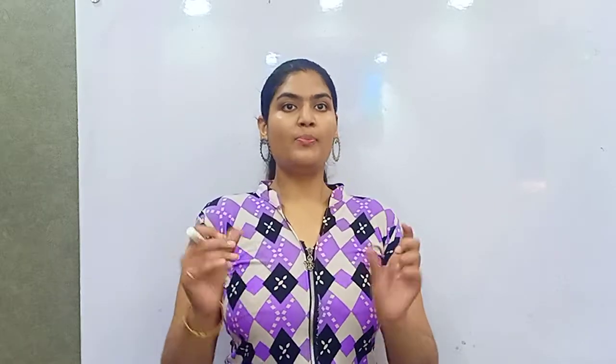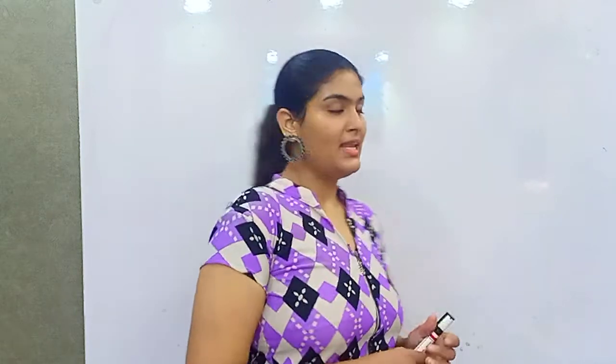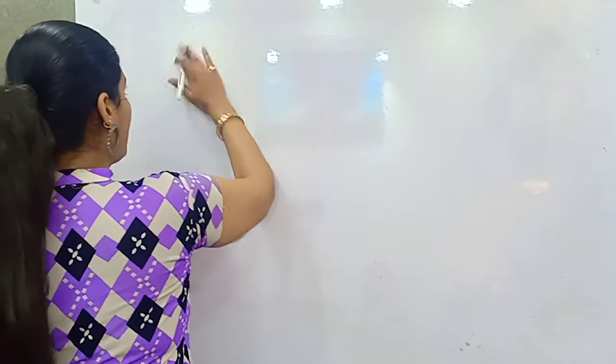Hello and welcome to Ganesh Institute channel. Today in this video we are going to discuss whether a partial differential equation is forming a hyperbola, a parabola, or an ellipse. What you need to do first of all is remember the quadratic formula, where we need to find out the discriminant b squared minus 4AC, and determine whether it is positive, negative, or zero.